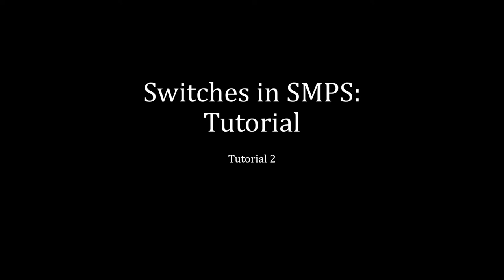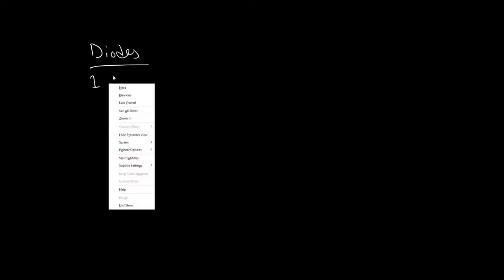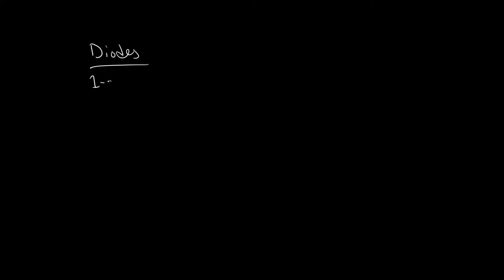After all this discussion about switches, I decided we should do a tutorial. To quickly recap what we talked about: first, we have diodes. We have to implement ideal switches with something real, some silicon device. We have diodes — they are one-quadrant devices.